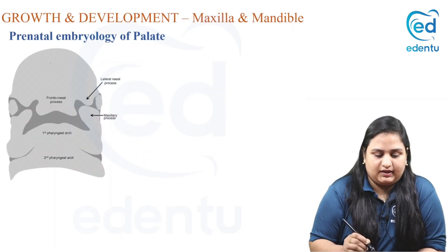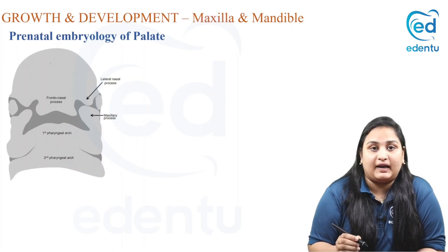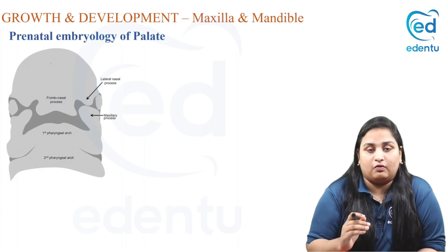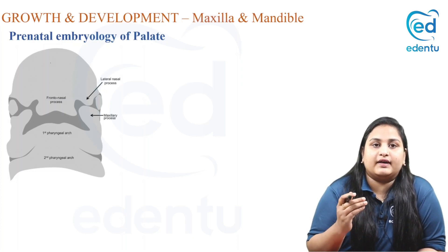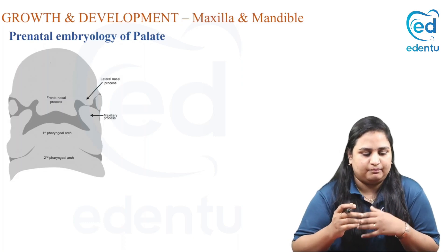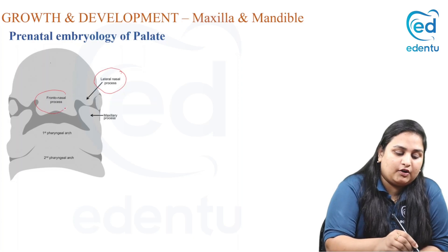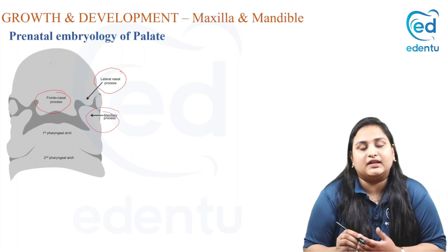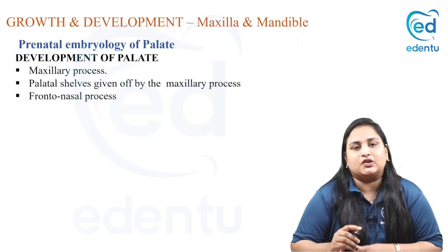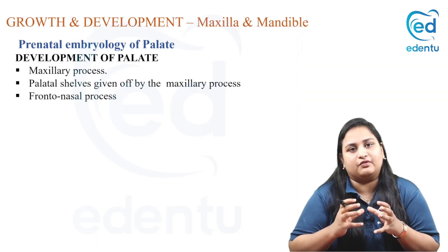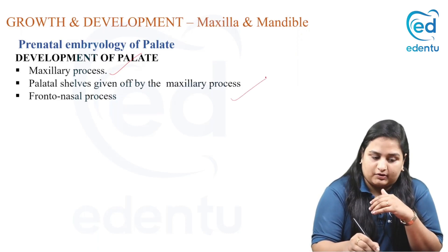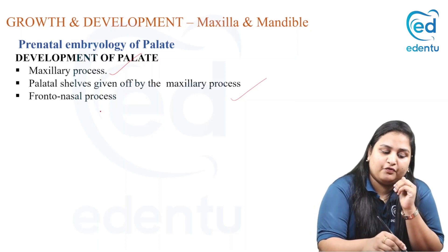The palate is highly important for the overall development of maxilla. The palate is not a unit-derived structure — it is a derivative of three different structures. It consists of the lateral nasal processes, the frontonasal processes, and the maxillary processes, which are derivatives of the first pharyngeal arch. Its components include the palatal shelves given off by the maxillary process, and the anterior portion given off by the frontonasal process.